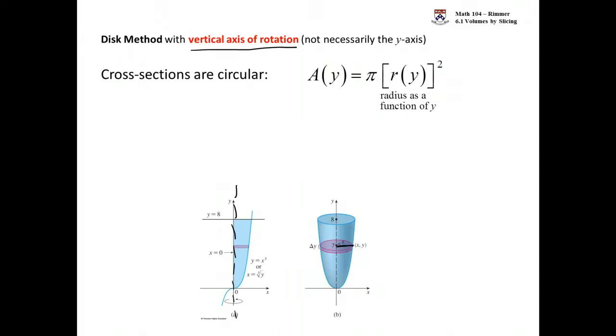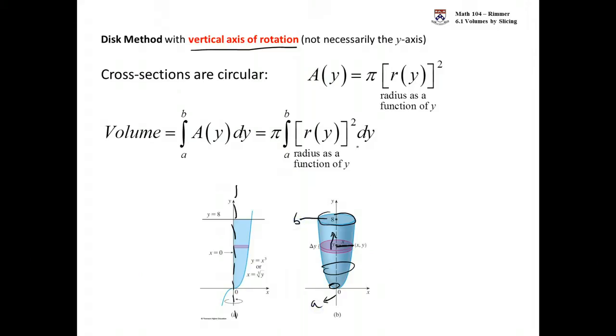And then what happens is this disk moves upward as you calculate the volume from some small value and then eventually we get up to the top. We'll call this A in this picture and then this guy is B. But the integral is in terms of y when you have a vertical axis of rotation. Like I said, this is disk method.